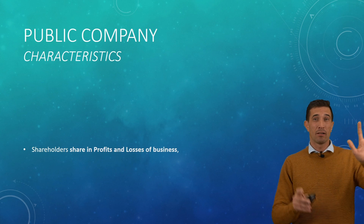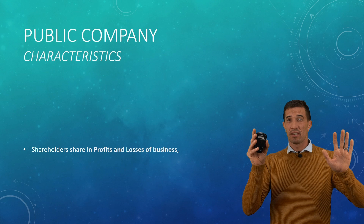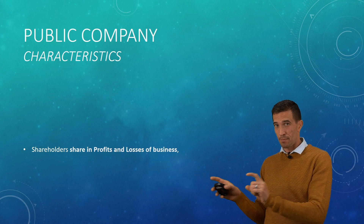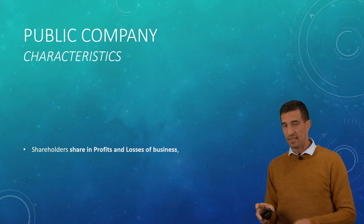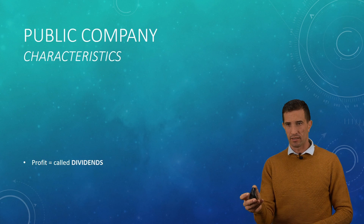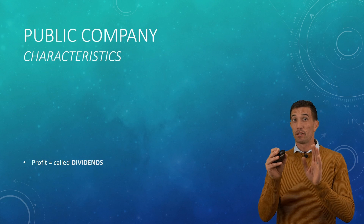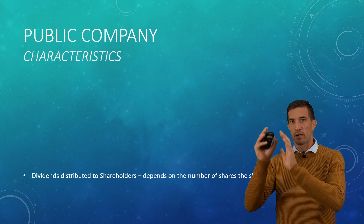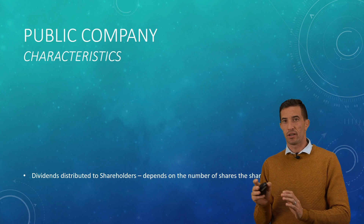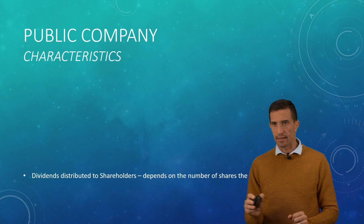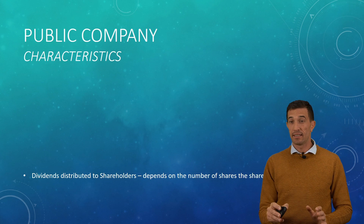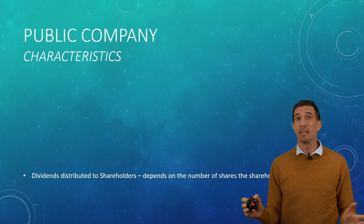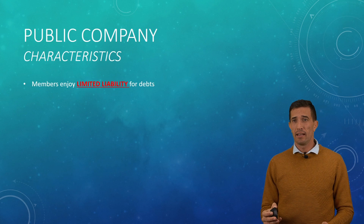There's a difference between the owners and the managers. If you pay a salary, that's not part of profit — salaries are expenses in accounting. So it's important to differentiate between an owner and a worker, manager, or director. Dividends are distributed to the shareholders and it depends on how many shares they have.